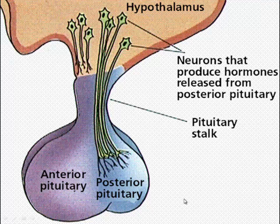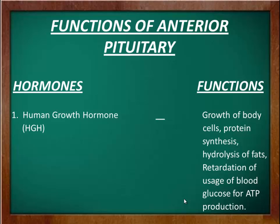Now let's talk about the functions of the pituitary gland, starting with the anterior pituitary gland. The anterior pituitary gland secretes eight types of hormones. The first is human growth hormone, which stimulates the growth of body cells, especially the bones of limbs. It also stimulates protein synthesis, inhibits protein breakdown, carries out hydrolysis of fats, and retards the use of blood glucose for ATP production.